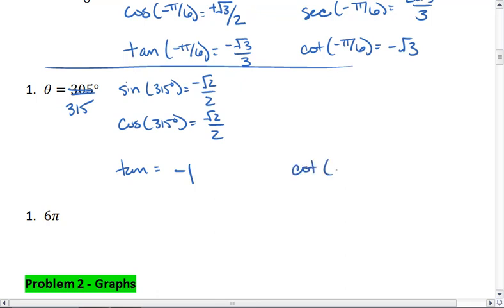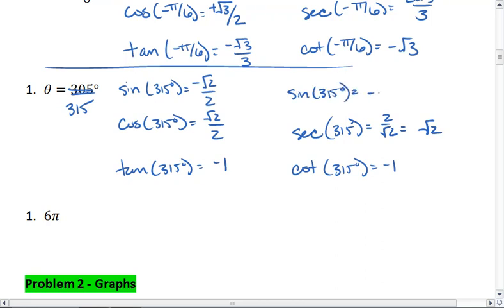That means cotangent is also negative 1. And secant is going to be 2 over √2, which becomes just √2. And then cosecant is going to be negative √2.